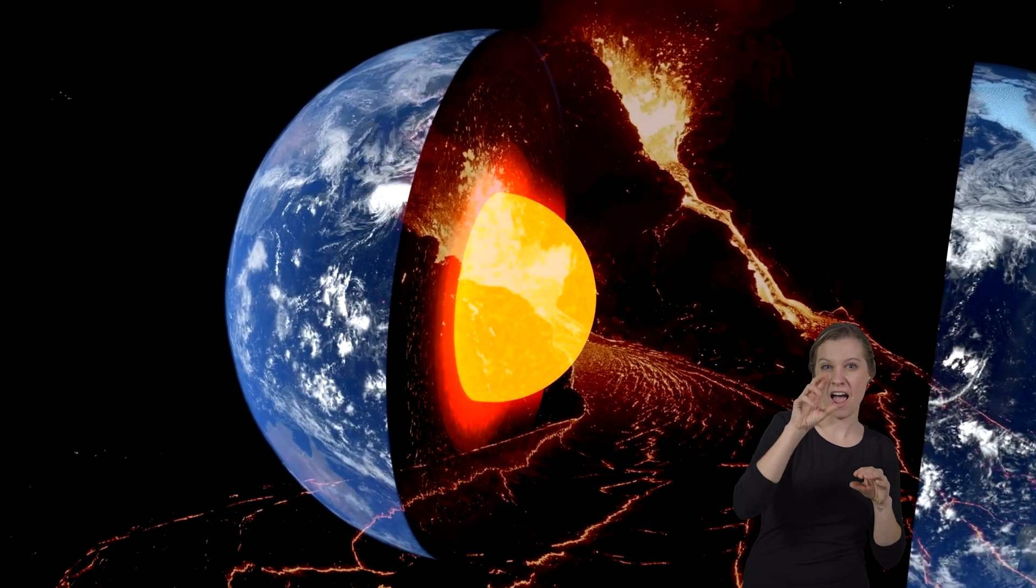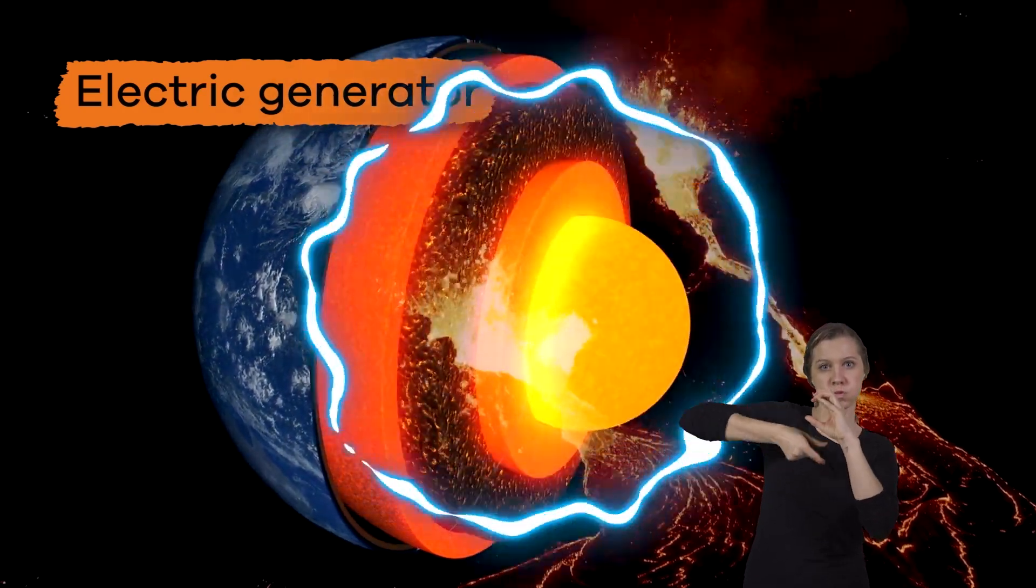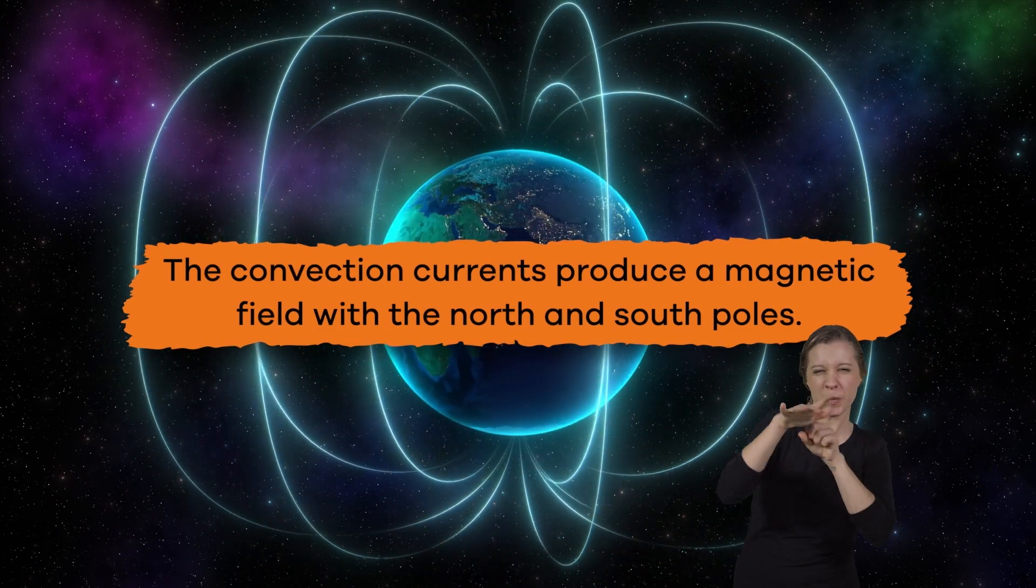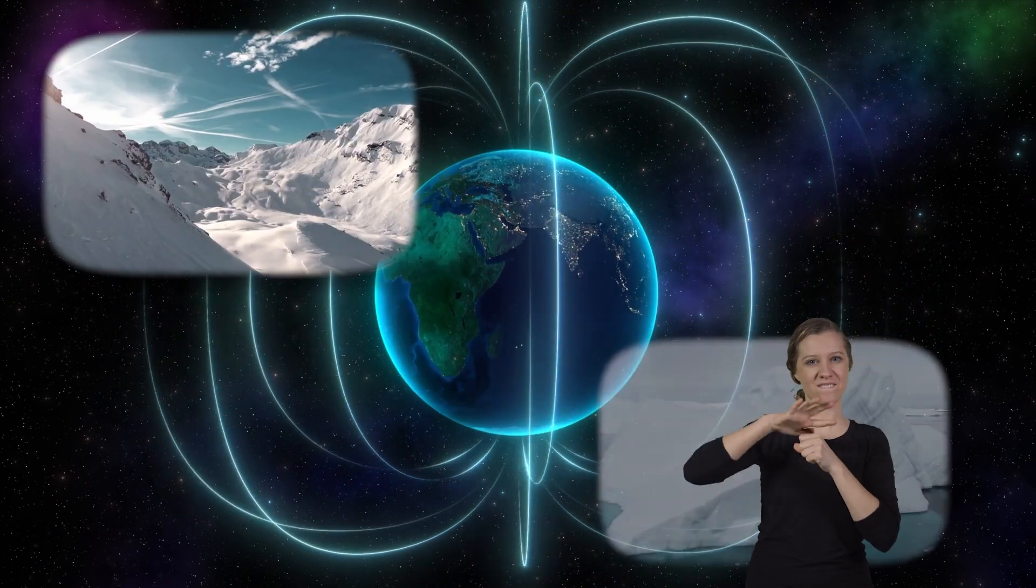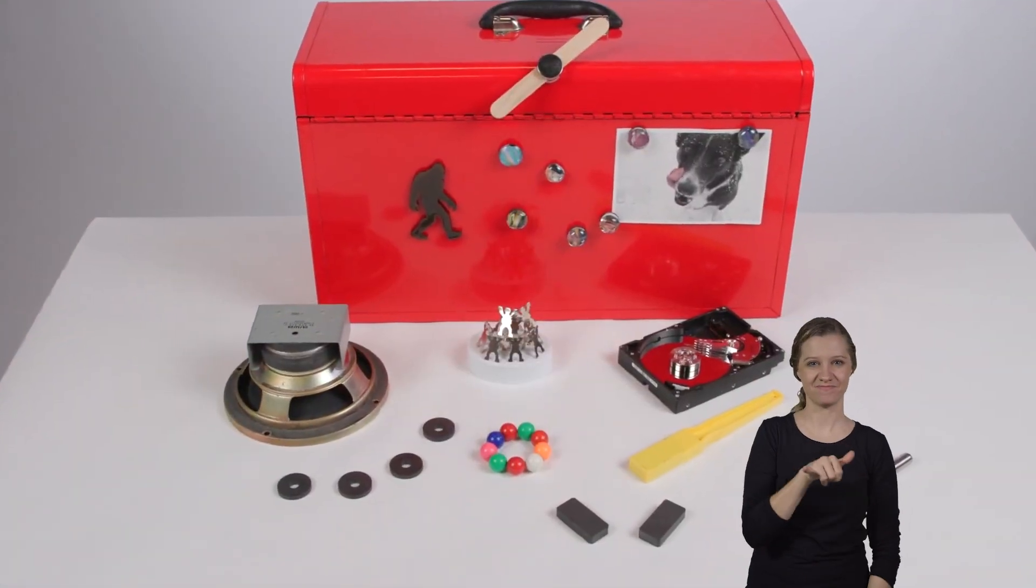The movement of these metals acts like an electric generator, creating convection currents that produce a magnetic field with north and south poles just like other magnets. Unlike standard magnets, however, the earth's magnetic field can flip over long periods of time.